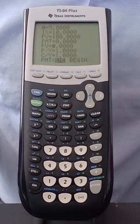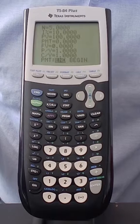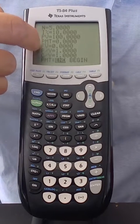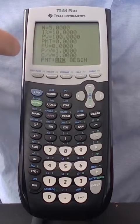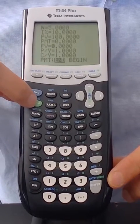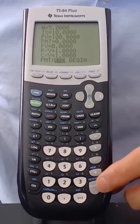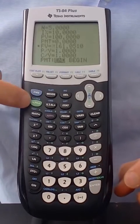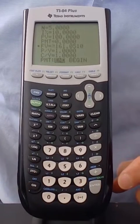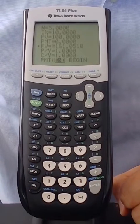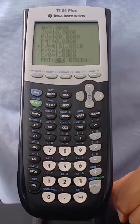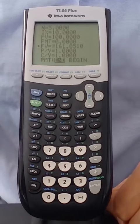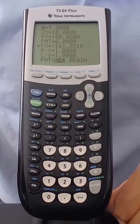To tell the calculator I want the future value, I need to have the cursor at future value and press the green alpha button and then enter. Very important. Alpha, enter. And it returns a value now. It says negative 161.05. So this means that the future value of the $100 five years later at 10% is $161.05.